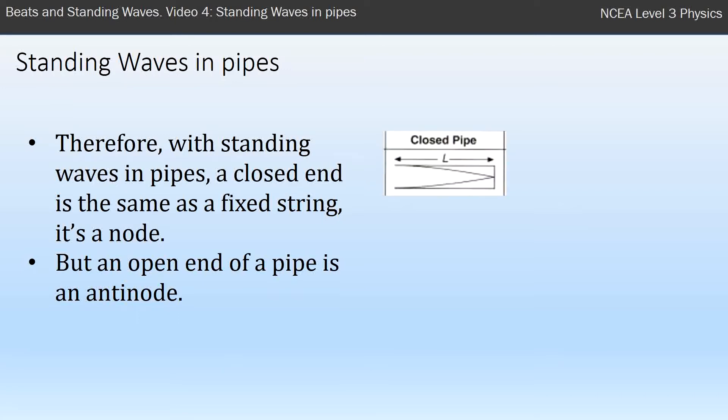For example, this is a closed pipe—one end's open and one end's closed. You see at the closed end there's a node and at the open end there's an anti-node. An open pipe has two open ends and they both have anti-nodes at each end.